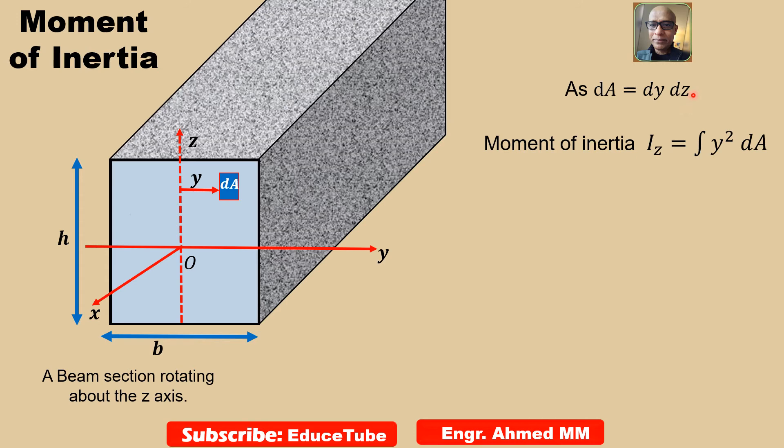Same thing dA equal to dy dz. Here also we will use double integrals. So moment of inertia Iz equals y squared dA. Our next step we will be putting the limits. b by 2 minus b by 2, h by 2 minus h by 2. We are considering this dz with this limit, so it will be our first integrations. Because this y squared dy will be with this one. So dz we are getting z having limit h by 2 minus h by 2.